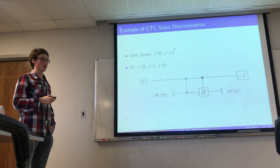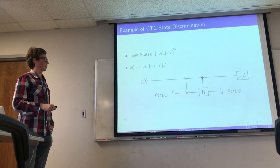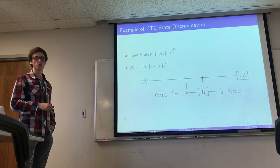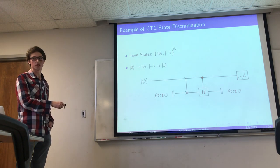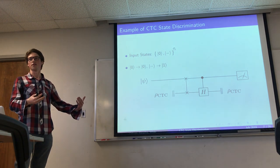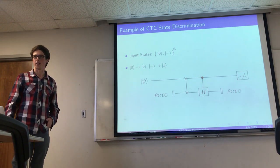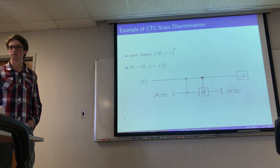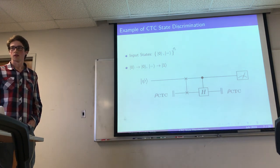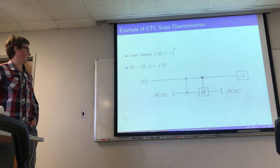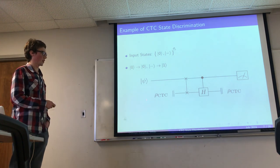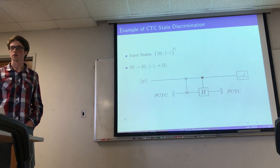One way to think about it: the ρ_CTC effectively knows it is going to affect the measurement, so when it emerges from the CTC it initializes to a state satisfying the self-consistency condition — the same state going in as coming in, like an eigenvector. The CTC state can indeed be represented as an eigenvector of the Markov transition matrix.